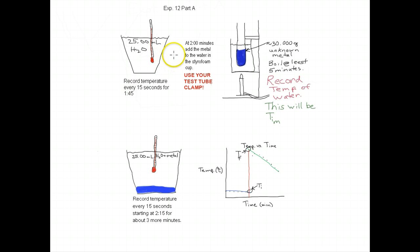You're going to be working with a partner, and you'll have to work together to do this. At exactly the two minute mark, the test tube should already be just taken out of the water. Use a test tube clamp, it's going to be hot, and add the metal. Dump it right into this 25 milliliters of water.